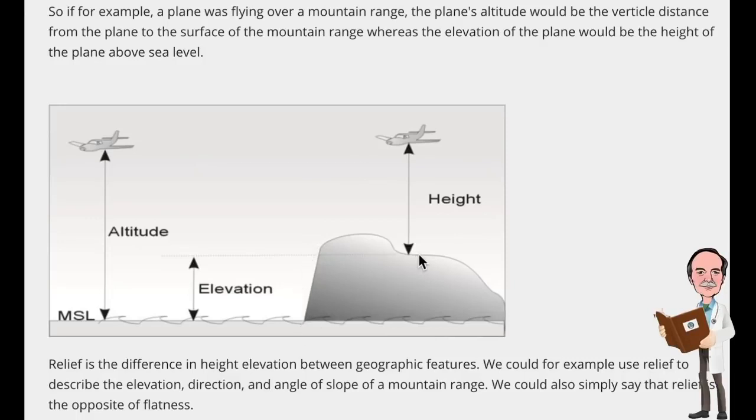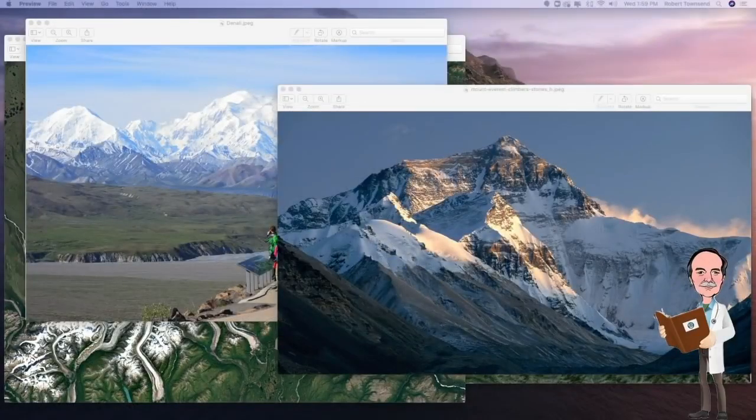The vertical relief from this plateau at 7,000 feet to the top of the mountain would be 3,000 feet, and that is this distance right here. Now, here's how looking at just vertical relief can get you into trouble.